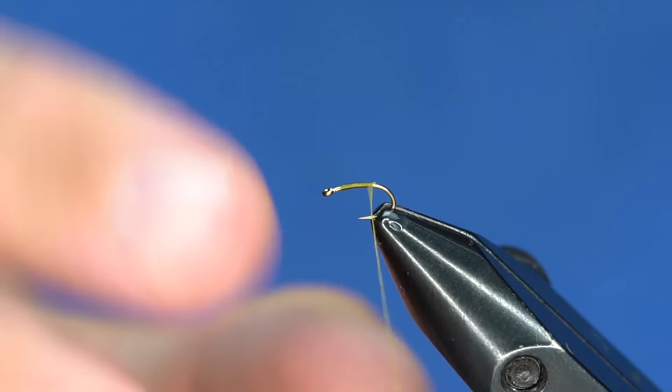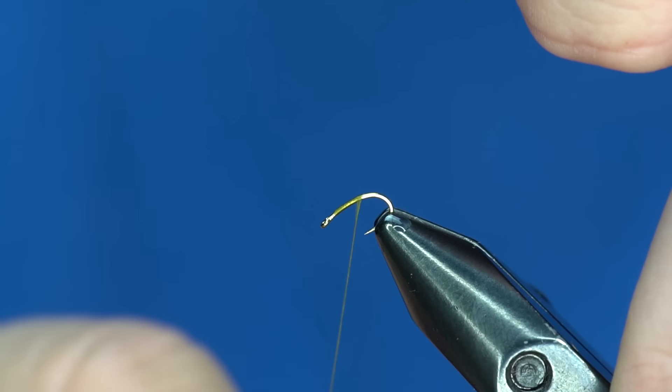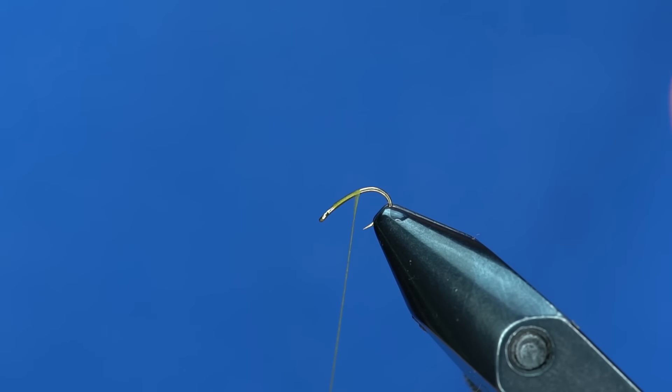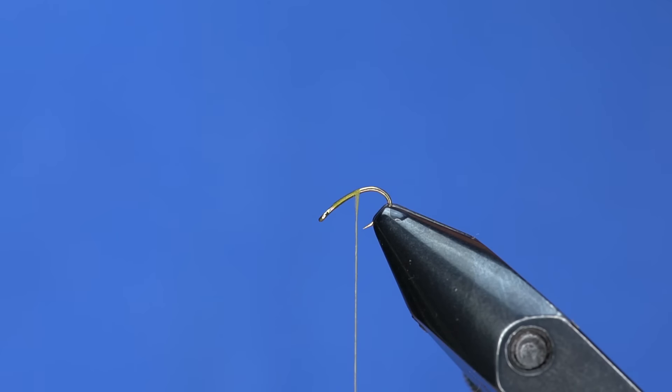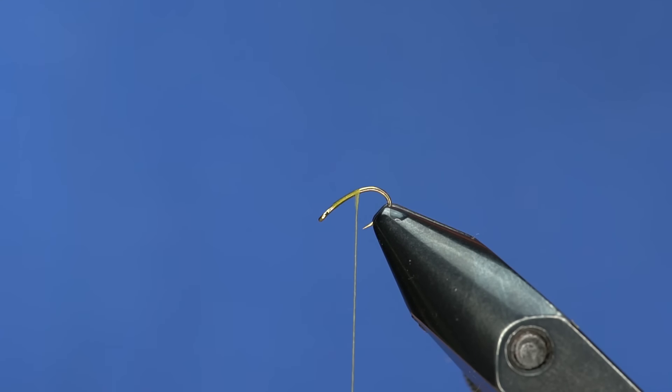I'm going to tie in a tail, and because this is a curved shank hook, I usually like to adjust the hook in the vise and point it down a little bit. It gives me a little bit of room to work with. The tail on this is just going to be some Brahma fibers from a feather like that. You can use partridge, you could use pheasant, you could use regular hen, you could even use yarn for the tail on this one.